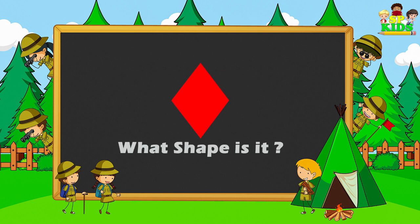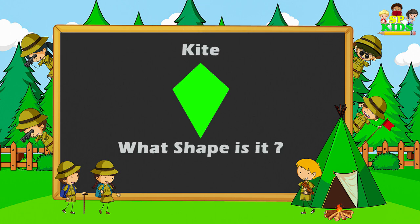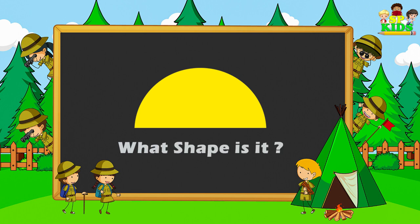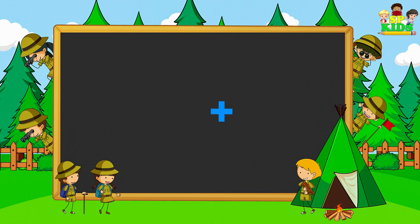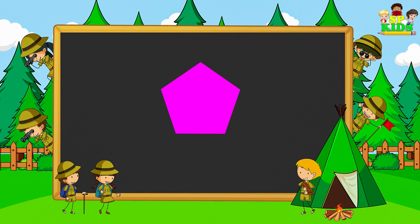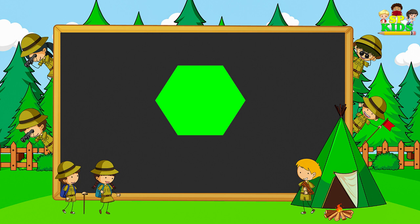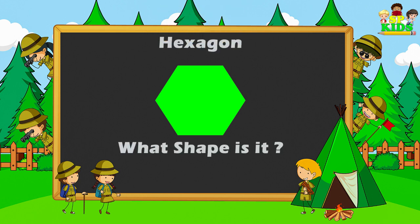What shape is it? Rhombus. What shape is it? Rhombus. What shape is it? Rhombus. What shape is it? Pentagon. Rhombus.